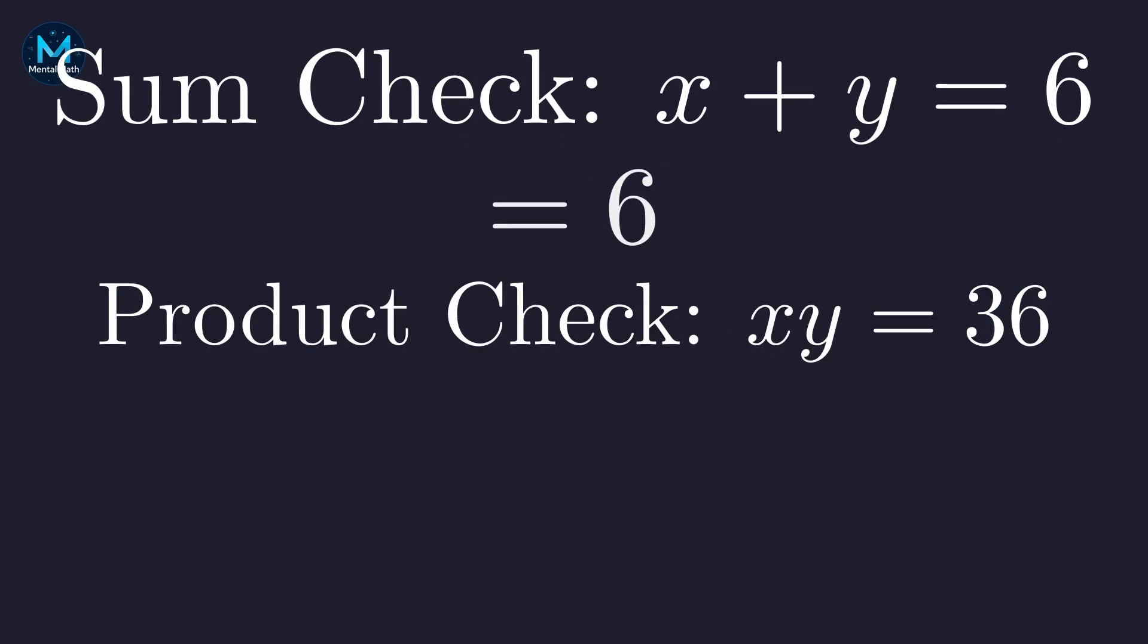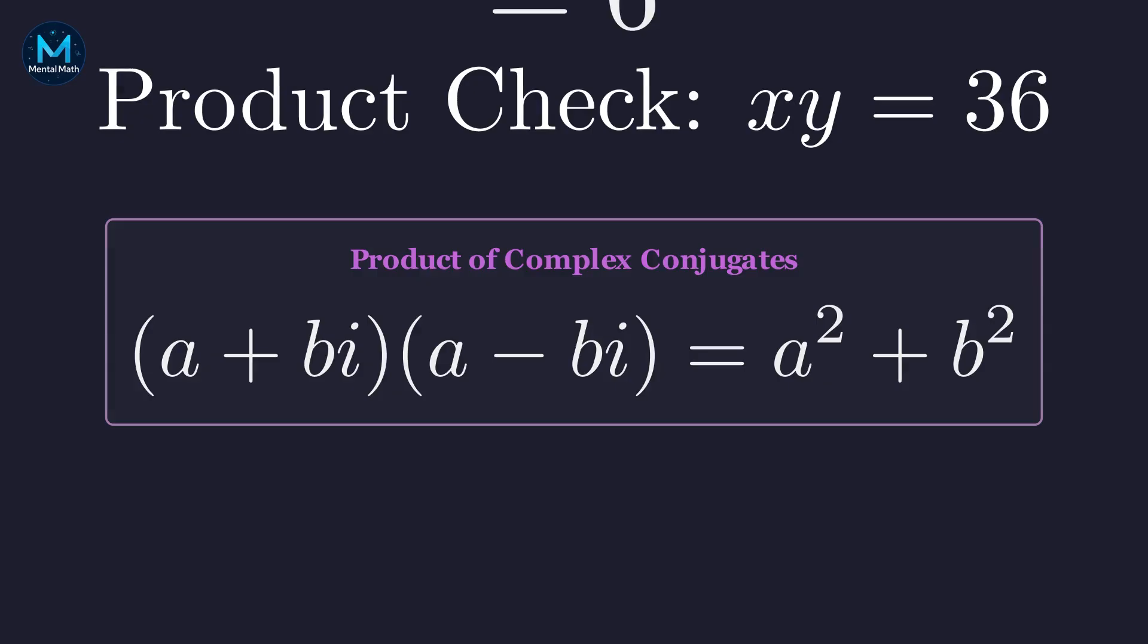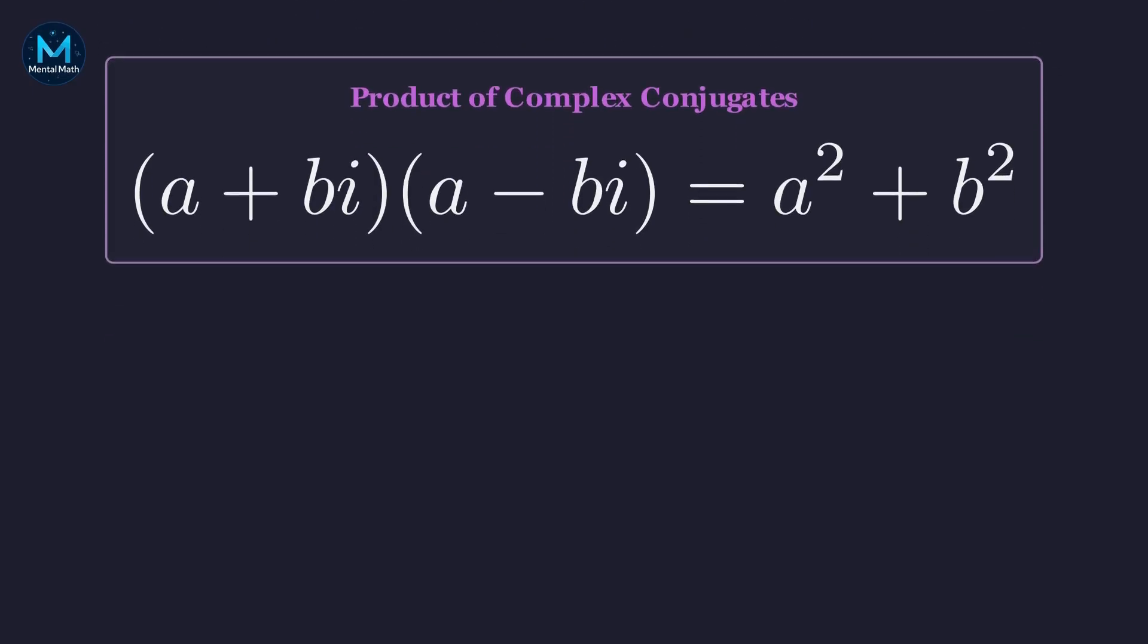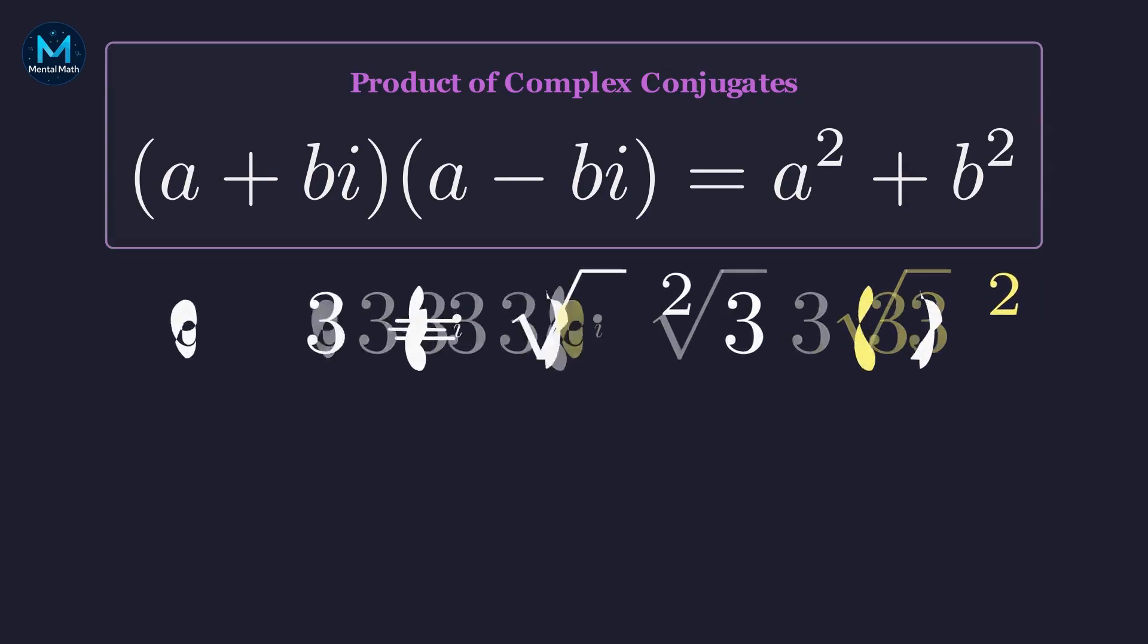Now the product. Does x times y equal 36? There's a nice shortcut for multiplying complex conjugates. A plus bi times a minus bi just equals a squared plus b squared. Here a is 3 and b is 3 root 3. So we get 3 squared plus 3 root 3 squared. Let's work out this squared term. That's 9 plus 9 times 3.